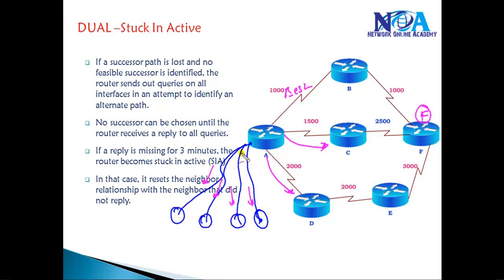What is the solution? We can limit the number of query and reply messages by configuring the end locations as a stub. I can simply go to each router and configure it as a stub.